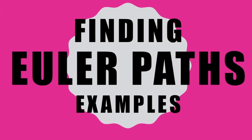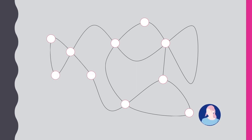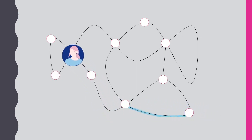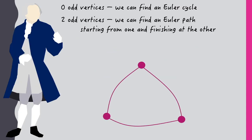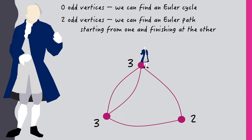Here we'll give some examples for determining whether or not a graph contains an Euler path or cycle, and if they exist, how to find them. The problem is determining whether we can trace a path that crosses each edge exactly once. Recall Euler's result that such a path can be found as long as the graph has a maximum of two odd vertices. If there are no odd vertices, then we can find an Euler cycle, and if there are two odd vertices, the Euler path will start at one and finish at the other.